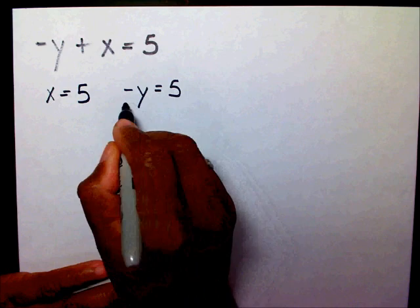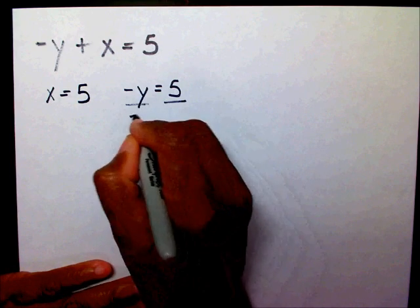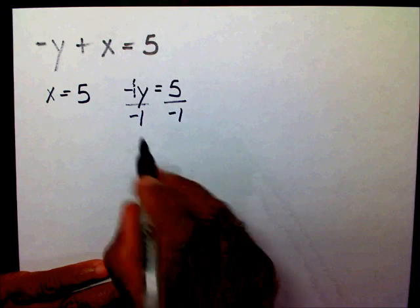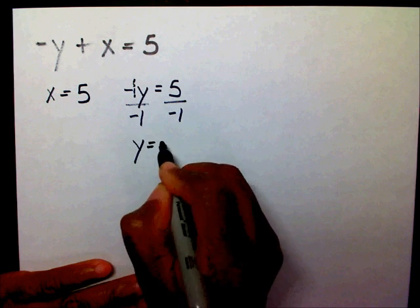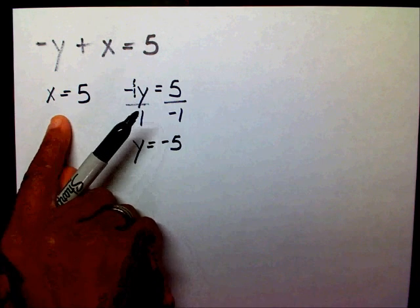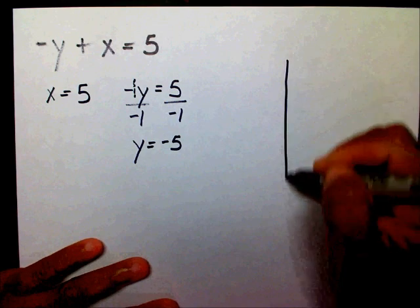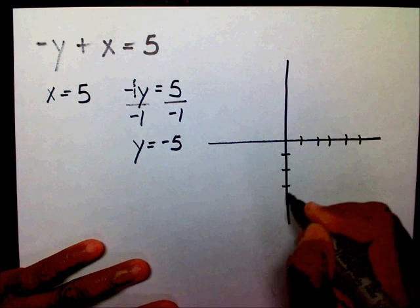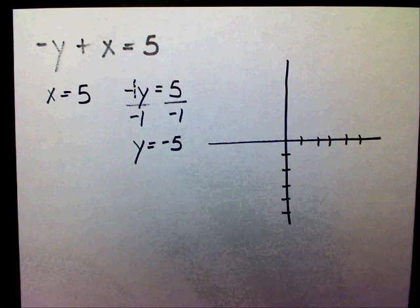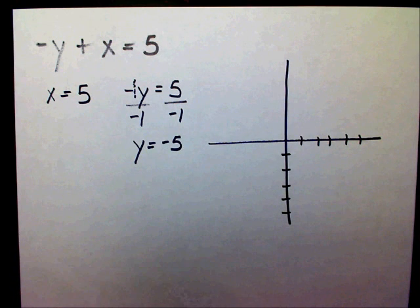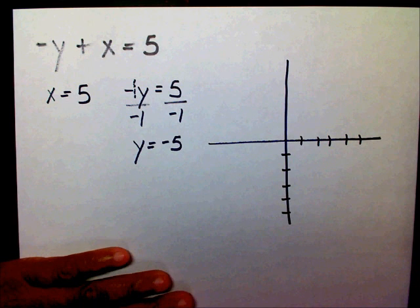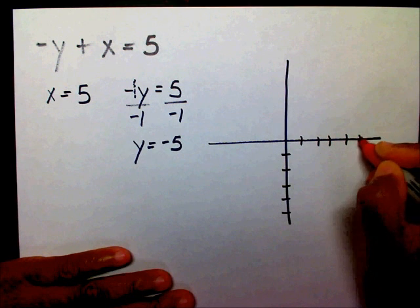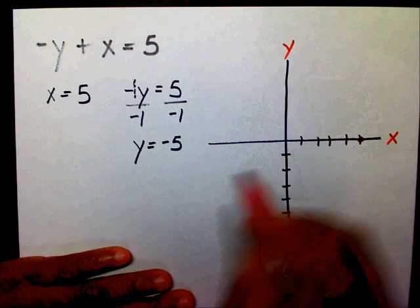So I'm going to divide both sides by negative 1, because we know there's a little 1 right there. So y equals negative 5. My x-intercept is 5 and my y-intercept is negative 5. I'll put a dot on 5 on my x line, and on my y line I'll put a dot on negative 5, and I'll connect these two.